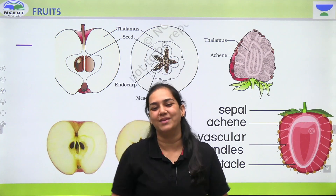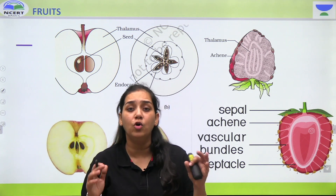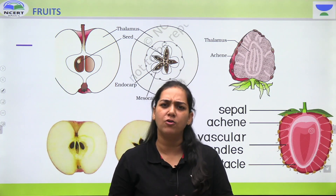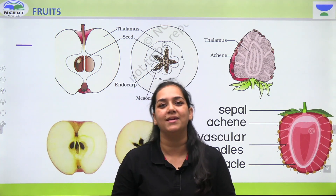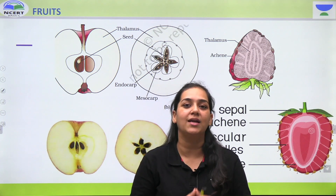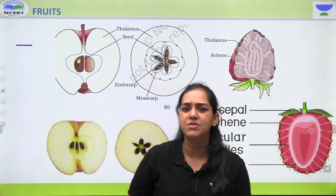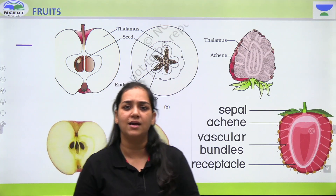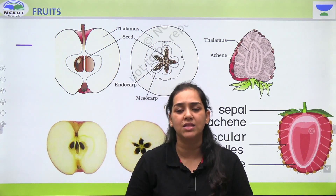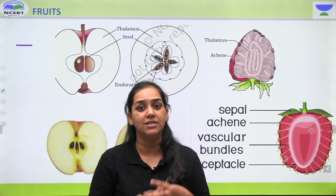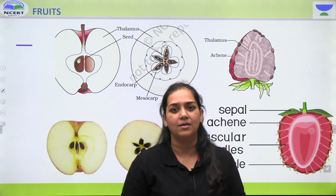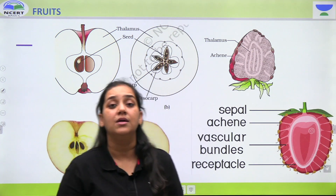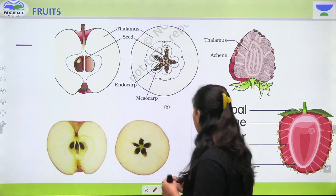Hello my dear students, welcome back to NCRT Basics channel. I hope you all are doing well. We were discussing sexual reproduction in flowering plants and its last part. Today we will learn about fruits, apomixis, and polyembryony. So let us start with fruits. What exactly is the definition of the term fruit?